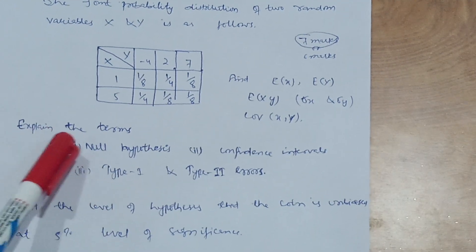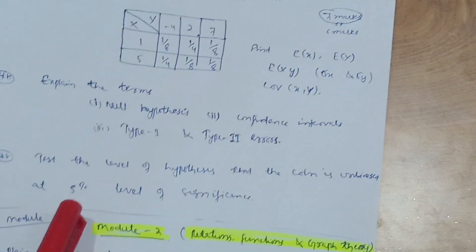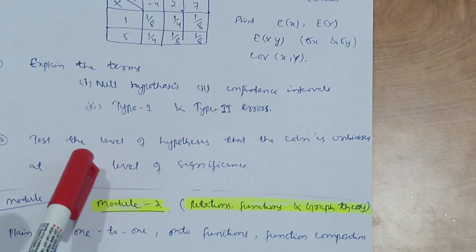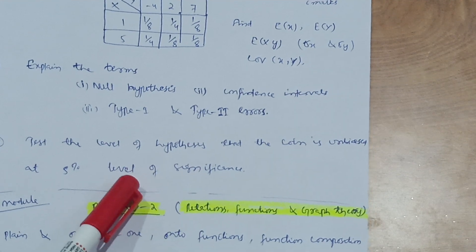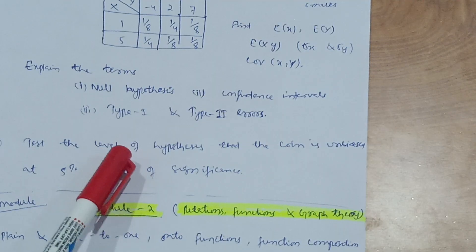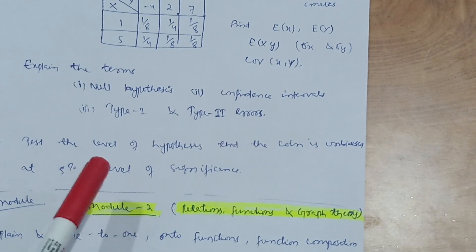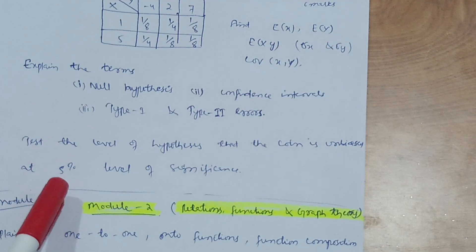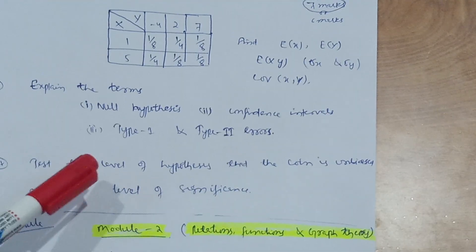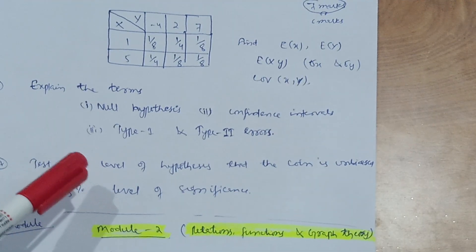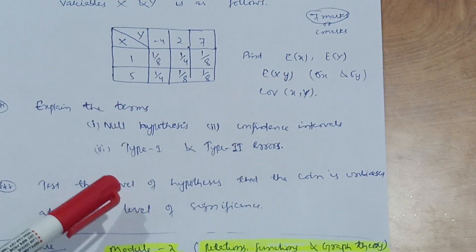If you want to cover theory concepts in the 'or' part of Module 5, focus on explaining terms like null hypothesis, confidence intervals, and Type 1 and Type 2 errors. Also focus on test-type questions such as: test the hypothesis that a coin is unbiased at the 5% level of significance — only the values may change. Refer to the A-Z notes of the 18th scheme for these concepts. You can easily cover 20 marks in Module 5 as well.